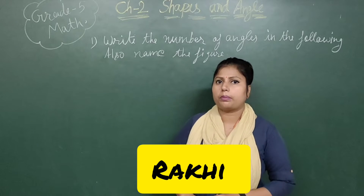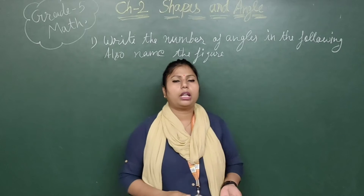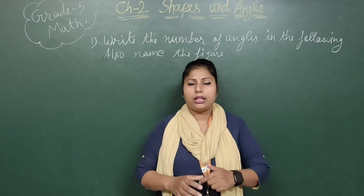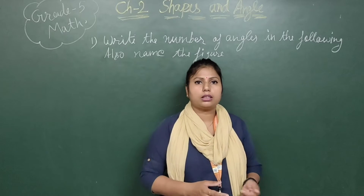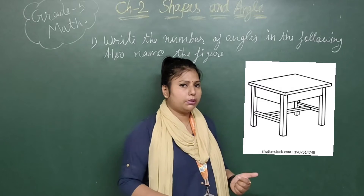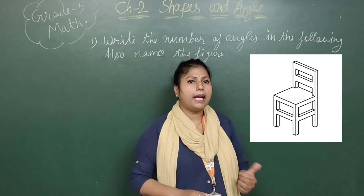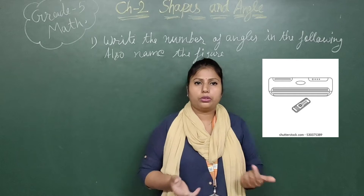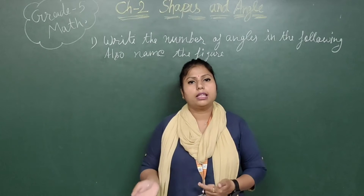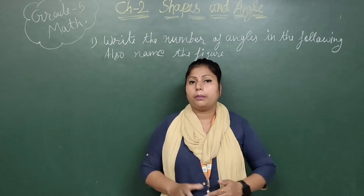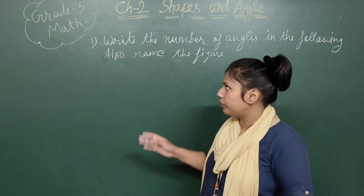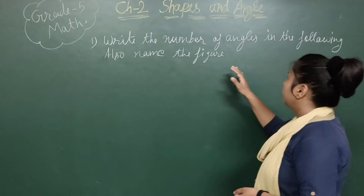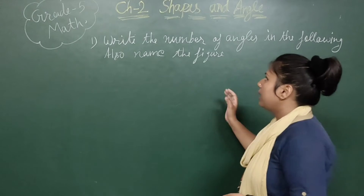Hello everyone, this is our first session of chapter number 2, Shapes and Angle. How can you define the angle? If you see around you, many things are there — you can recognize easily that is a table, chair, bed, house, AC. You can recognize things by their shape. Here we are starting from the workbook, question number 1, page number 22: Write the number of angles in the following figures and also name the figure.